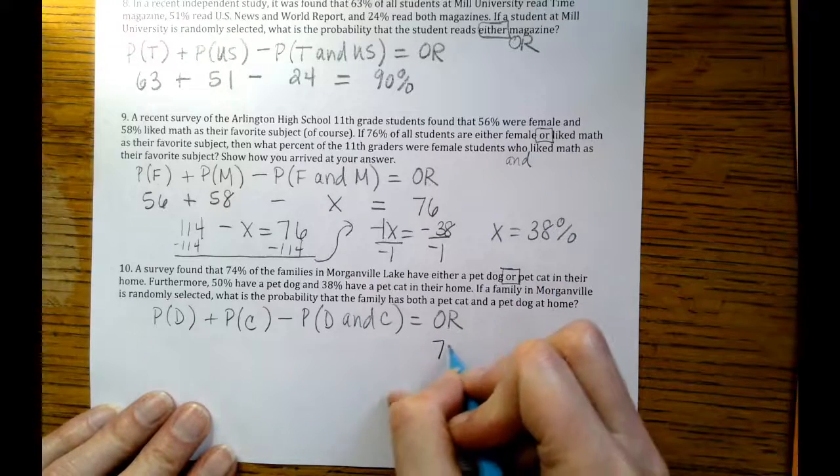We need to set this up. The probability that they have a dog plus the probability that they have a cat minus the probability that they have a dog and cat, and that's going to equal our OR. That's the first number that we have in this problem, which is 74% of the families have either a pet dog or a pet cat.